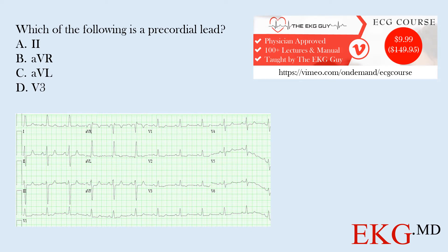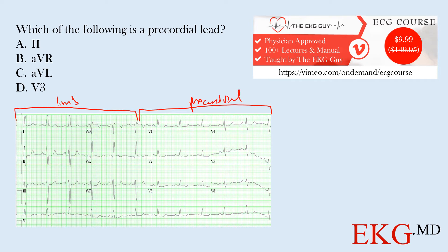Just to review our standard 12-lead EKG, we have our limb leads here on the left side and our precordial leads on the right side. At the bottom of the EKG you often have what's called a rhythm strip, which extends from the beginning all the way to the end and represents 10 seconds, whereas each of the individual leads represents 2.5 seconds.